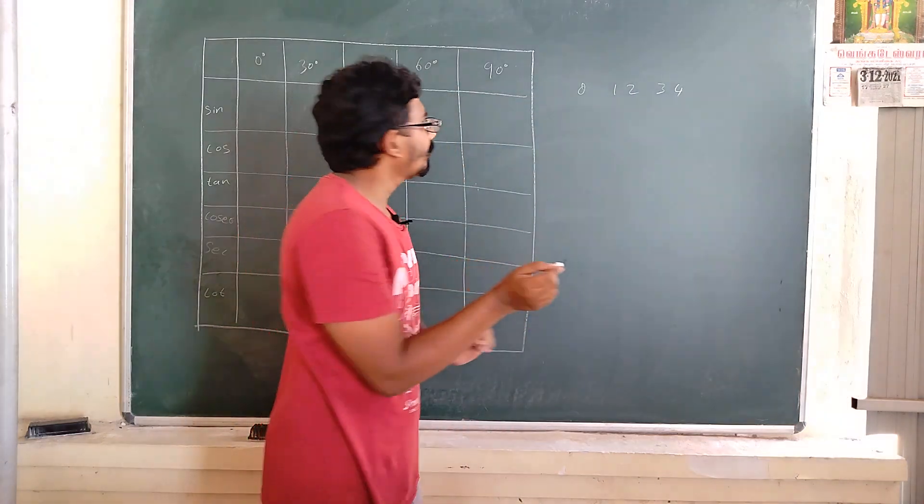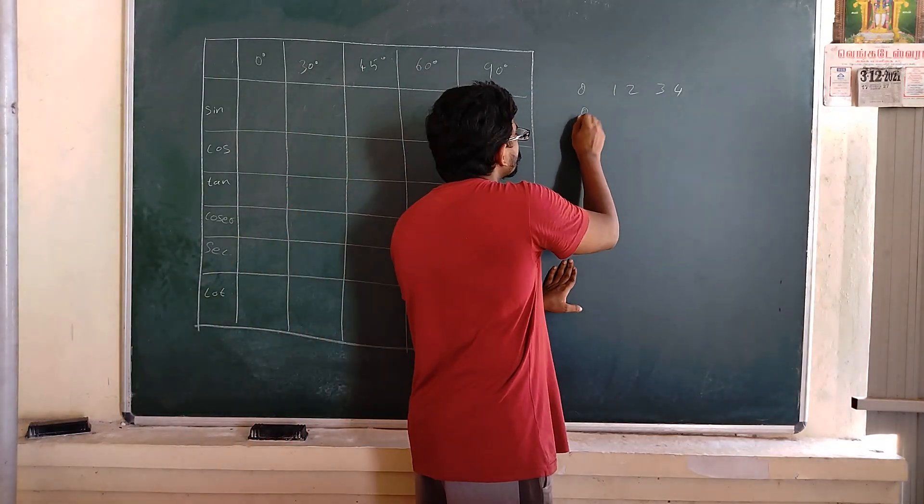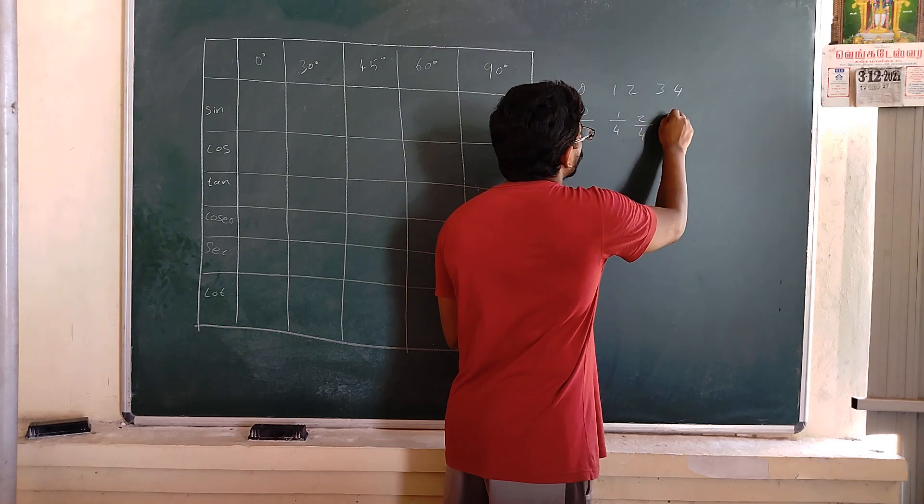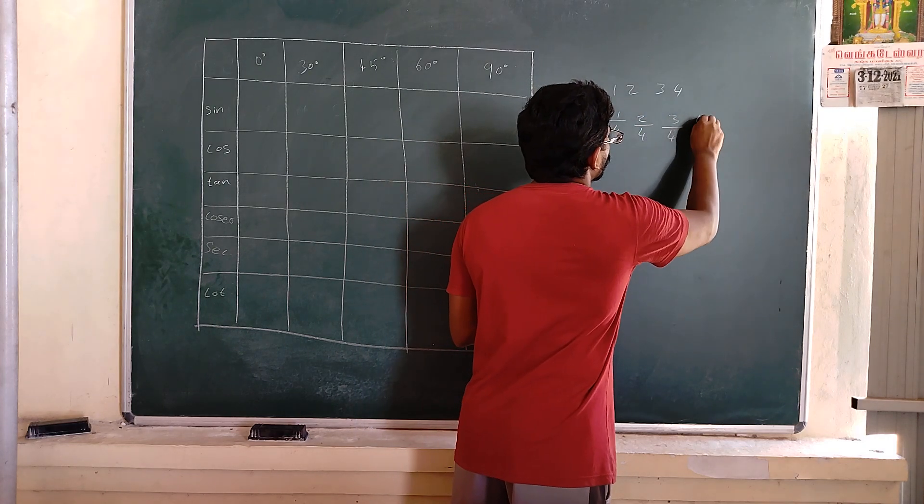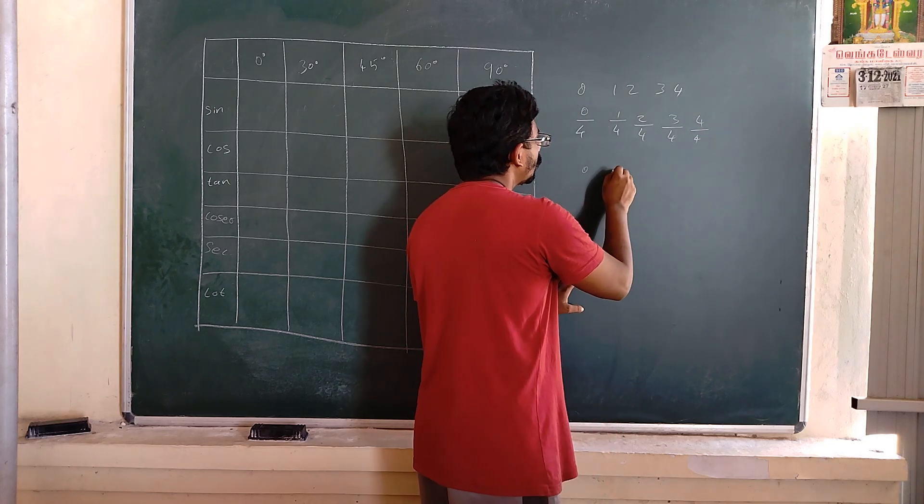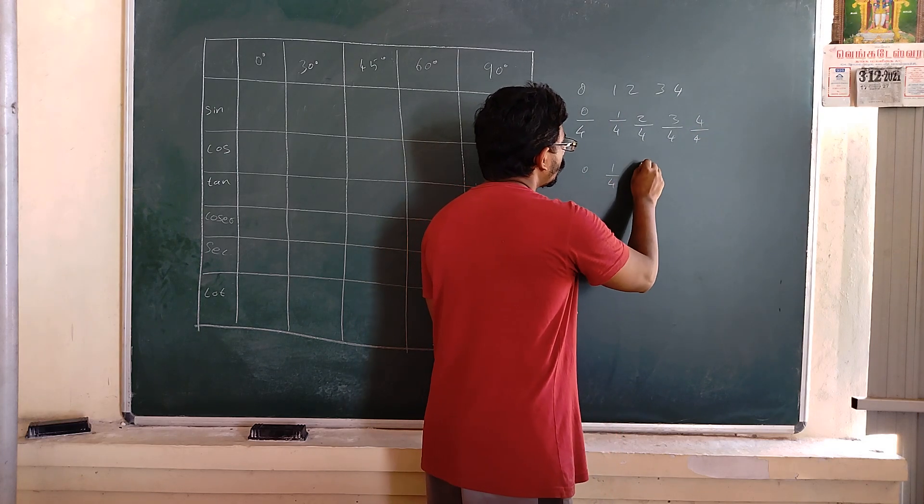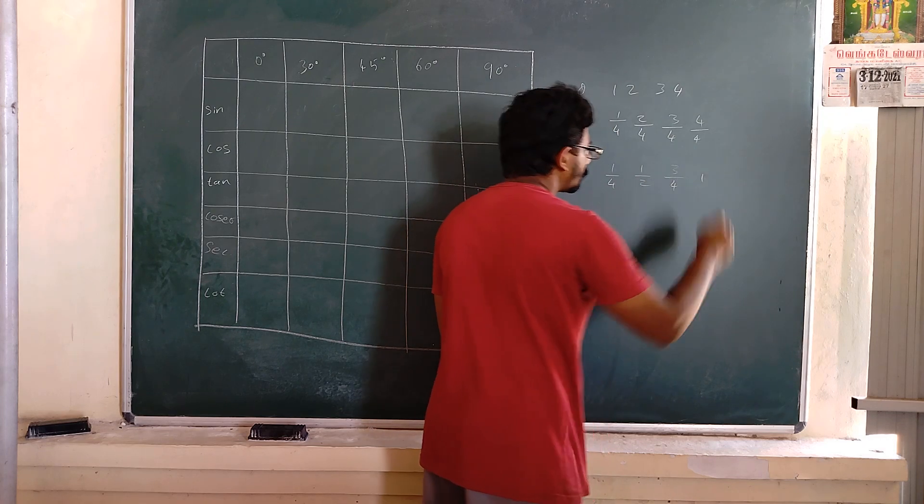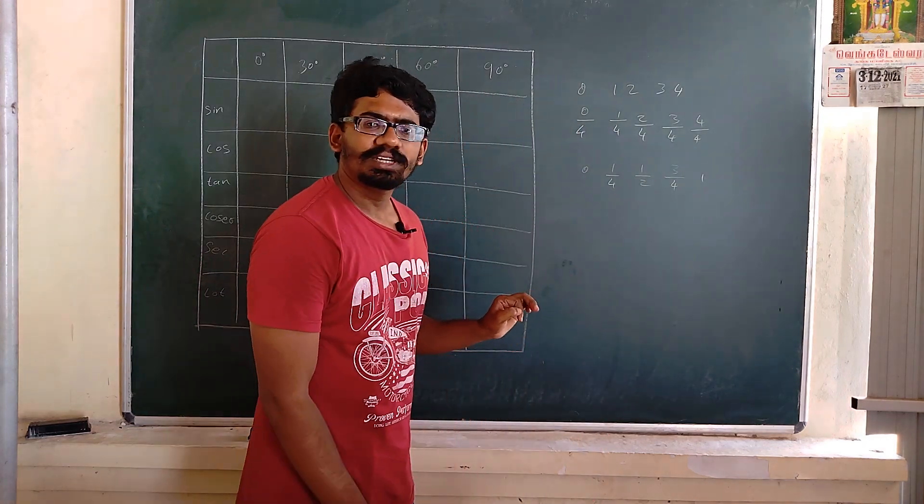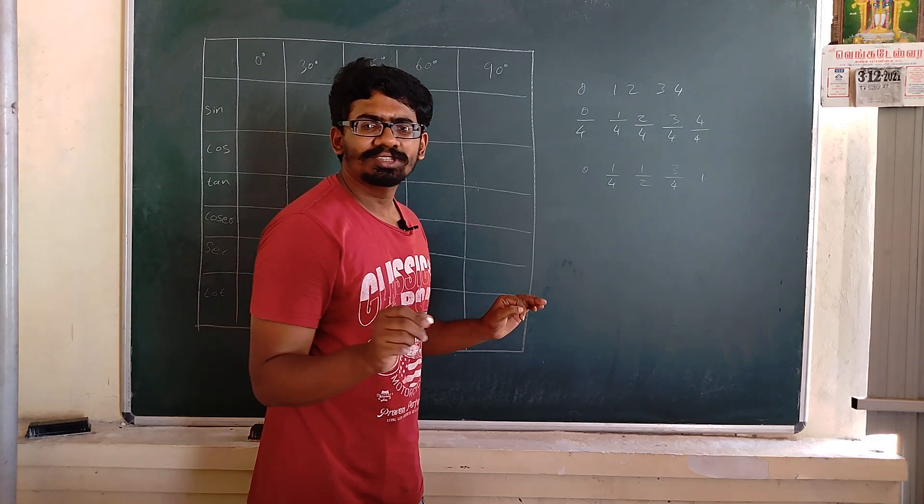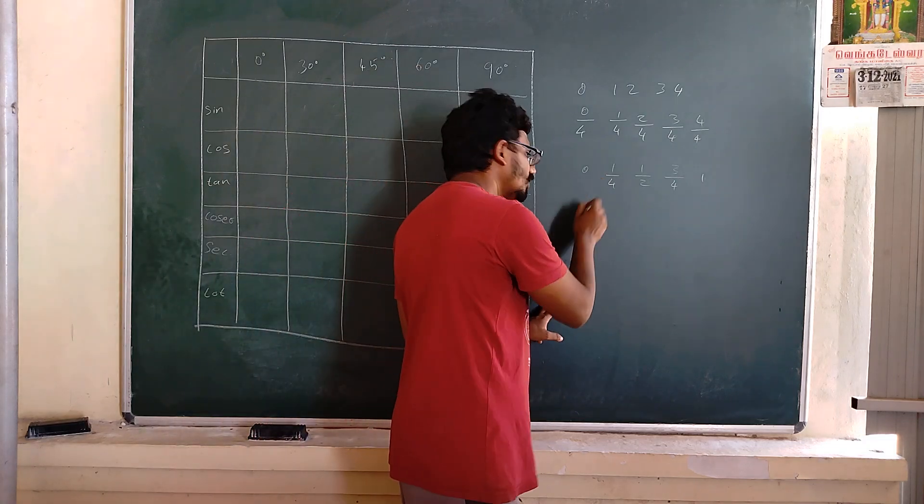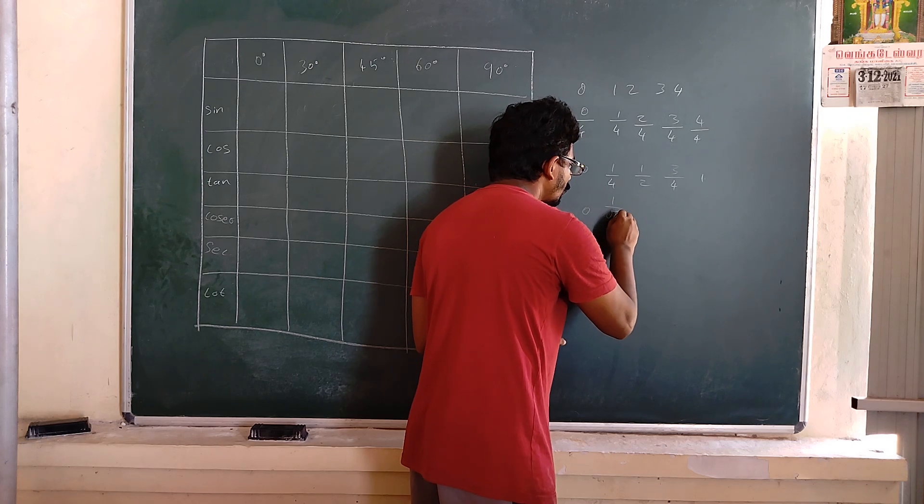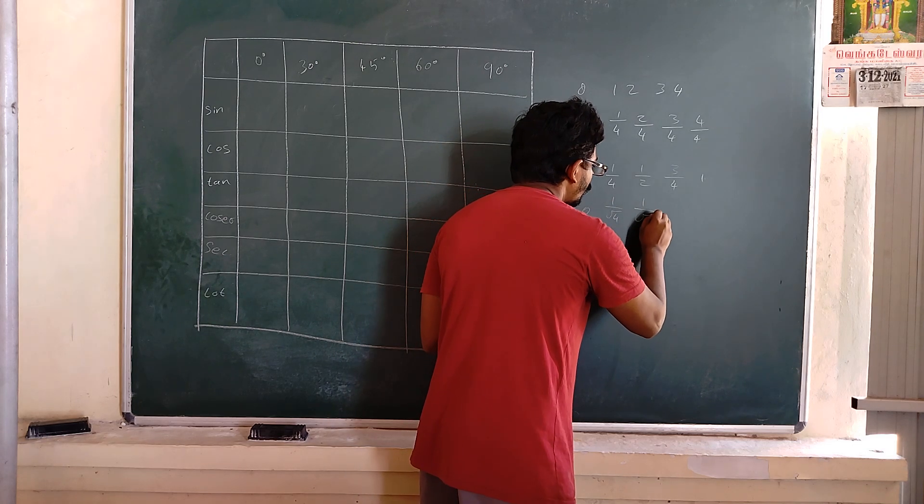Then divide those numbers by 4. The second step is divide the numbers by 4 and simplify: 0, 1/4, 1/2, 3/4, 1. The next step is take square root of these numbers - 0, square root of 1/4, square root of 1/2, square root of 3/4, square root of 1.